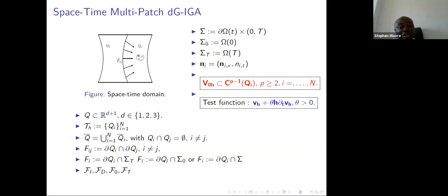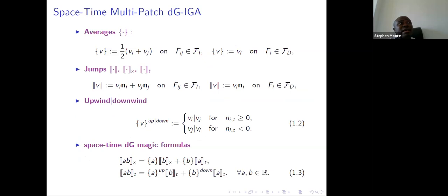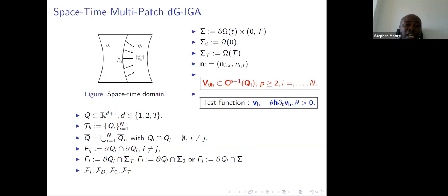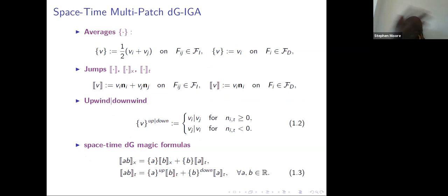The idea of discontinuous Galerkin is that because you have interfaces, you need techniques to handle them, one being averages. If we take two patches qi and qj, the average is given by half the sum of functions in i and j: vi is a function living in qi and vj is a function living in qj. On the interface, this average applies; away from the interface, the average is just one of these functions.